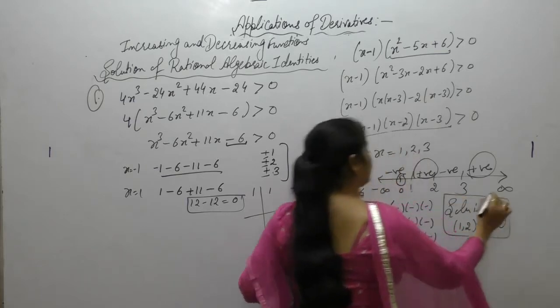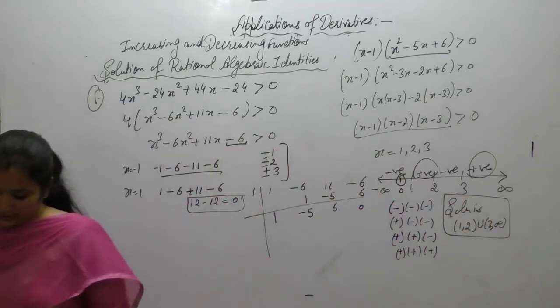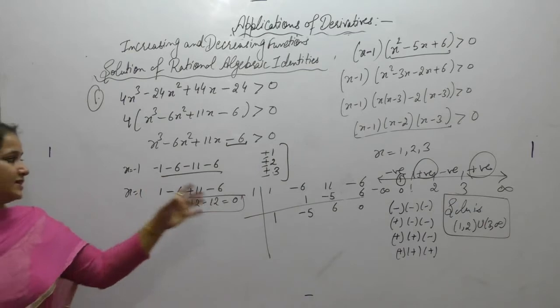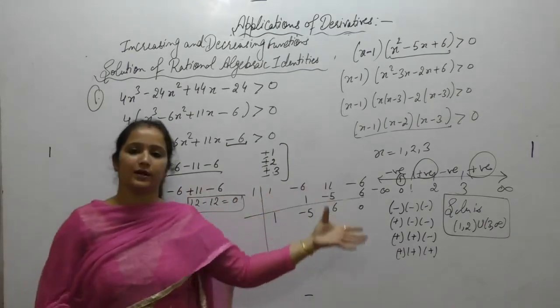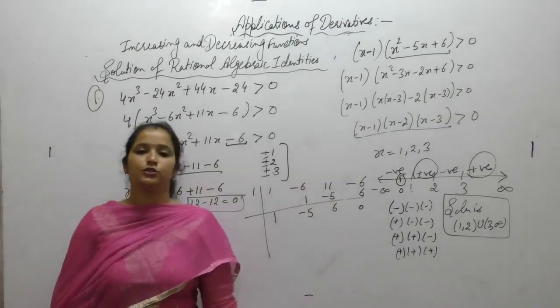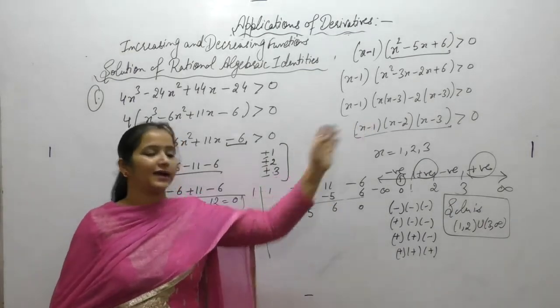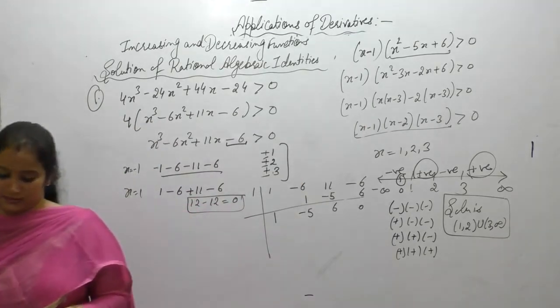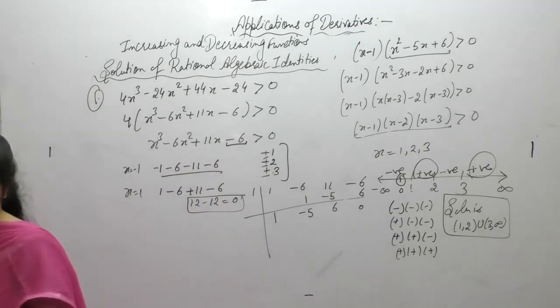The solution (1,2) ∪ (3,∞) indicates the sets where the function will be increasing. Note it down.